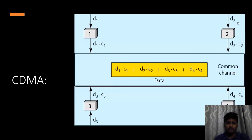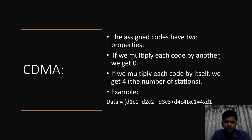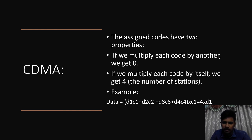The receiver uses the code to retrieve its own data. These codes are based on coding theory, and there are two important properties: if you multiply one code by another, you get 0; if you multiply a code by itself, you get 4 — that is, the number of stations. For example, D1C1 is from Station 1, D2C2 from Station 2, D3C3 from Station 3, and D4C4 from Station 4. If everything is multiplied by code C1, we get data D1 along with the number of stations.